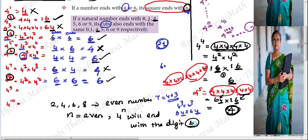When will you get the digit 6 in the ones place? When your N value in 4 power N is an even number. When it is an even number, the 4 power N final answer will end with the digit 6. Verify: 4 power 2 answer is 16, ones place is 6. 4 power 4 answer is 256, ones place is 6.